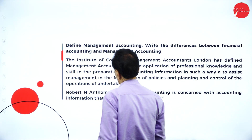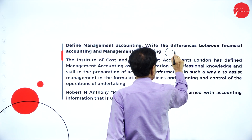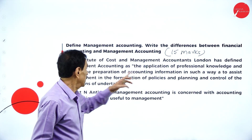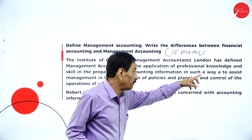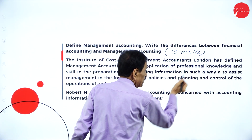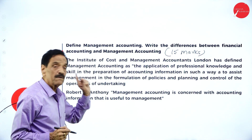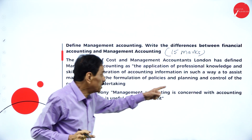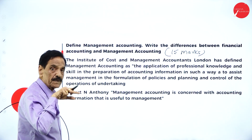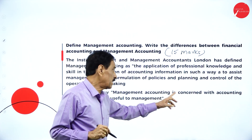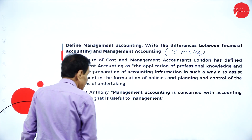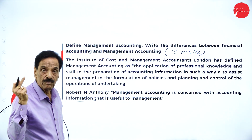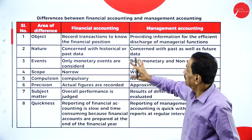For examination purposes, define management accounting and explain the difference between financial accounting and management accounting — this covers 15 marks. The Institute of Cost and Management Accounting, London, has defined Management Accounting as the application of professional knowledge and skill in the preparation of accounting information in such a way as to assist the management in the formulation of policies, planning, and control of operations. As per Robert and Anthony, management accounting is concerned with accounting information that is useful to management.